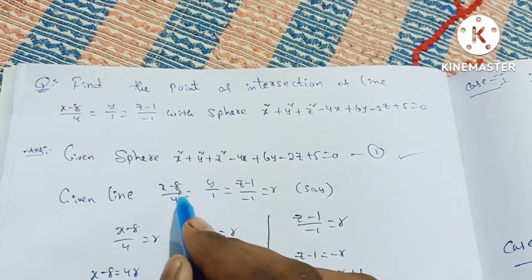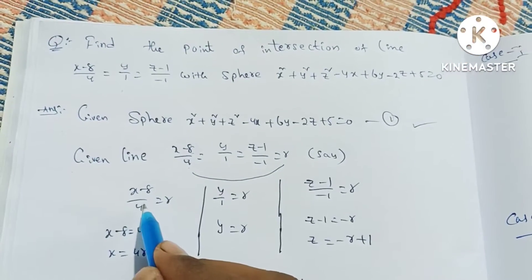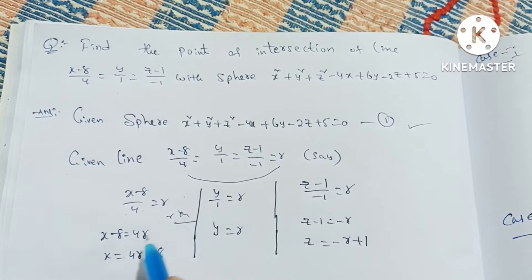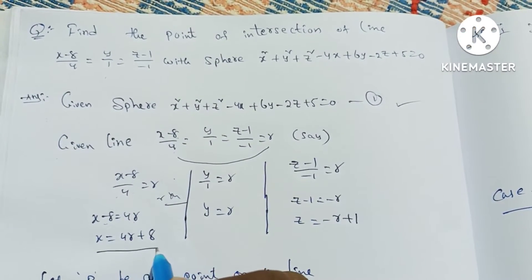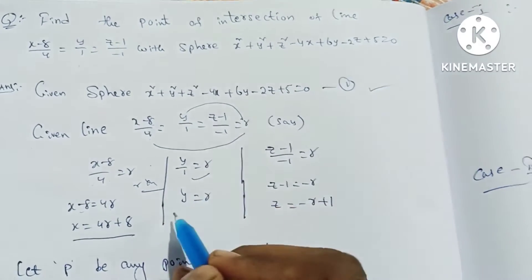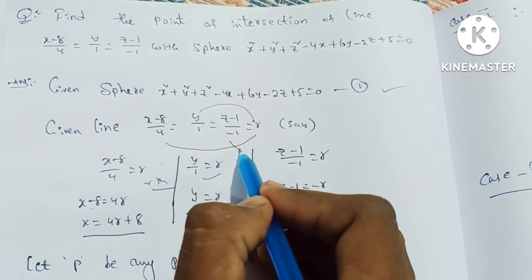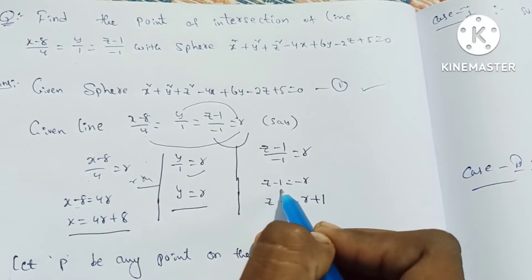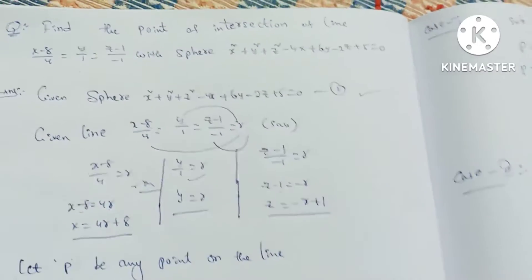So x minus 8 by 4 is equal to r. This is r equal to r. 4 and 4 are equal to r, so r into 4 is 4r. Minus 8 right is equal to r, so x is equal to 4r plus 8. Same, y by 1 is equal to r, so y is equal to r. Z minus 1 by minus 1 is equal to r. Minus 1 into r is minus r, minus 1 right is equal to plus 1, so z is equal to minus r plus 1.